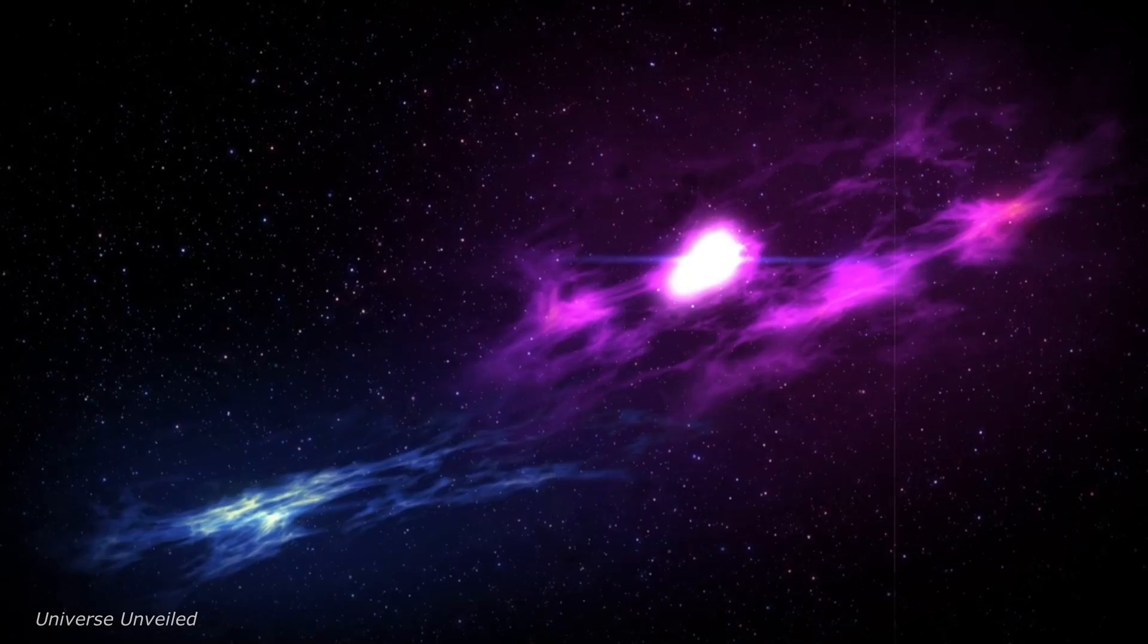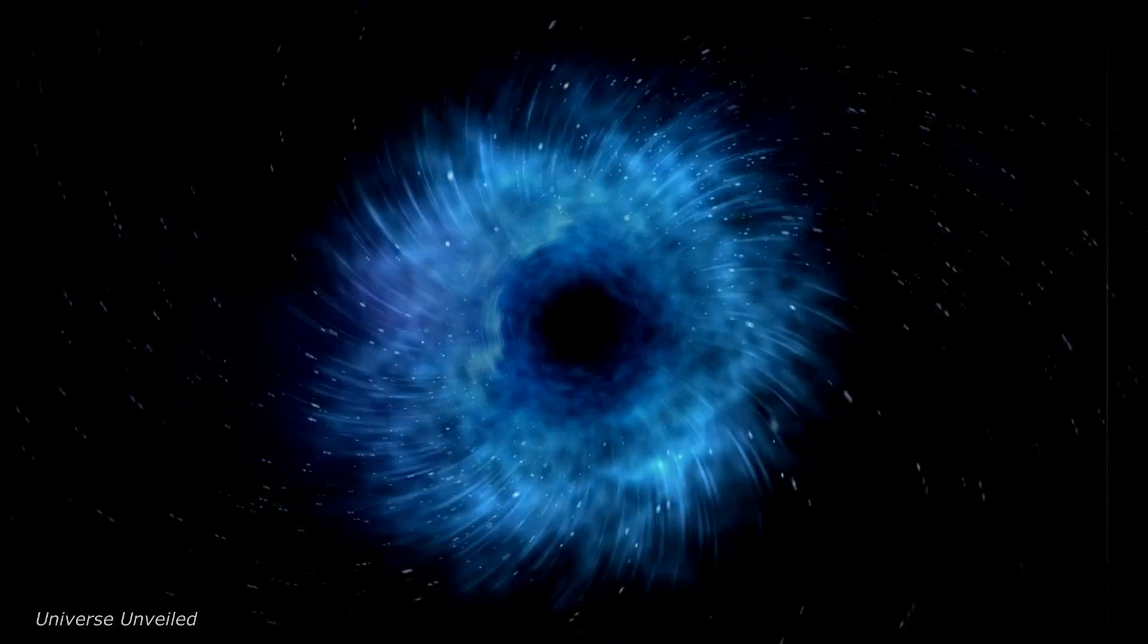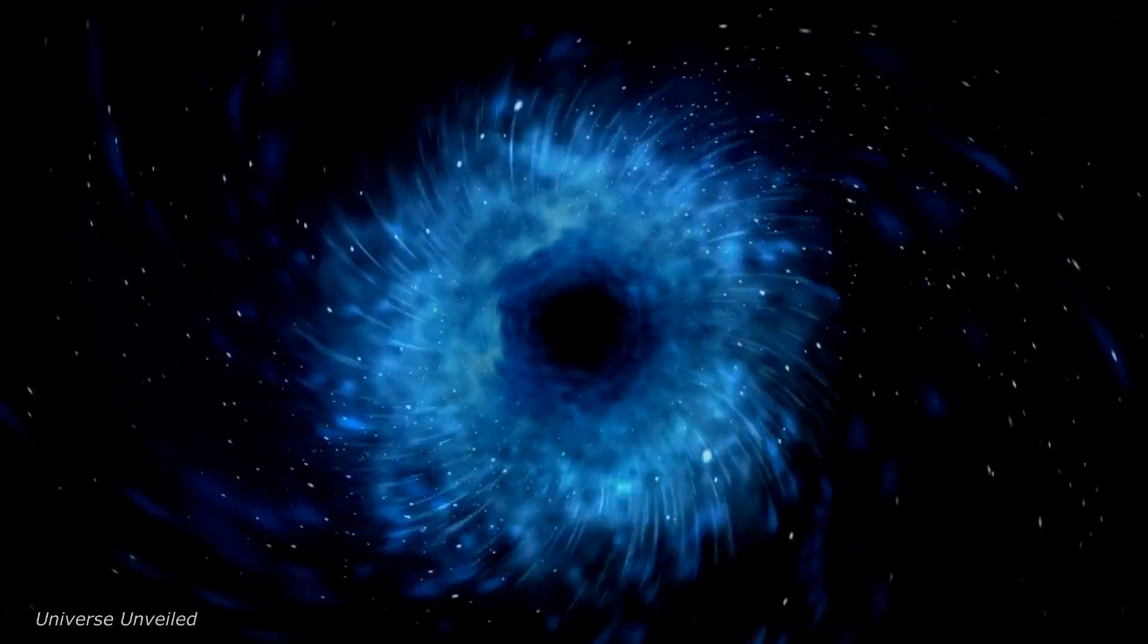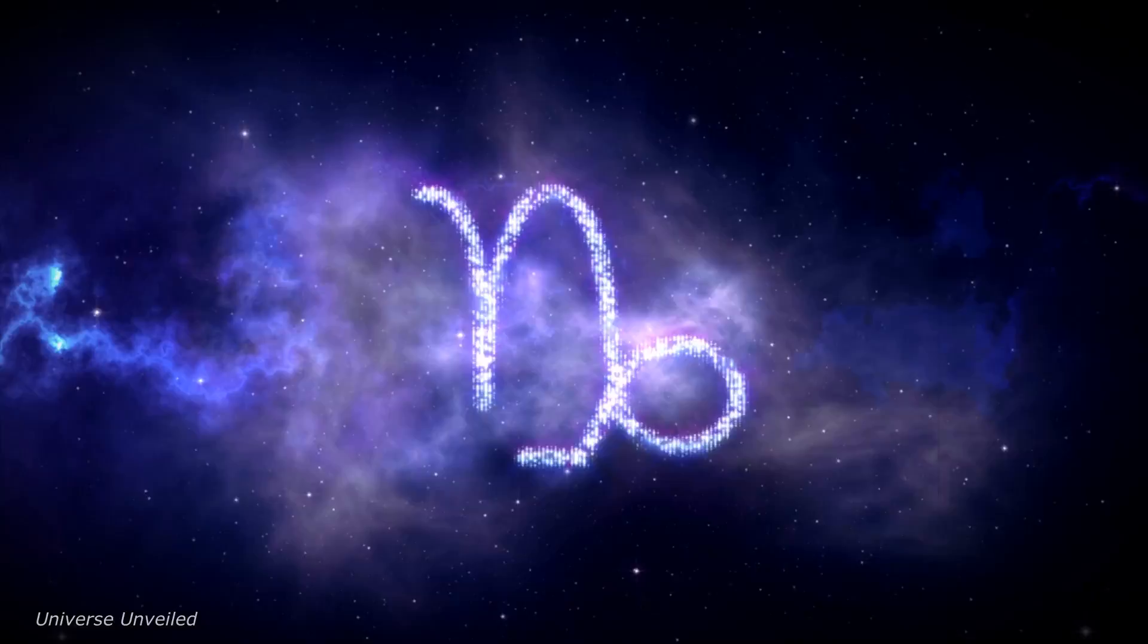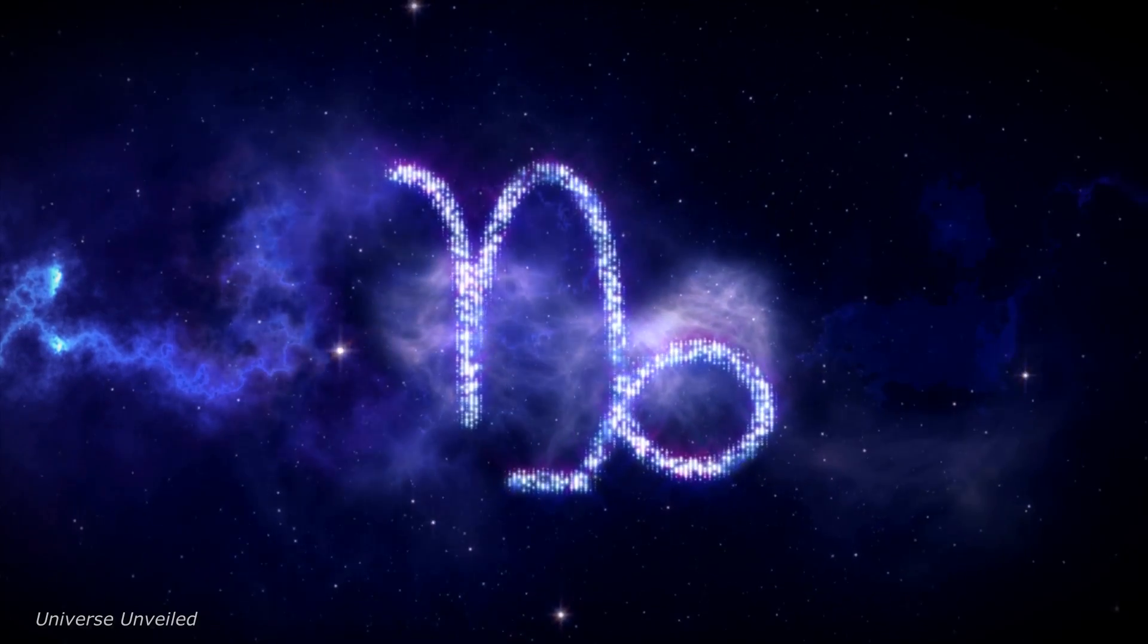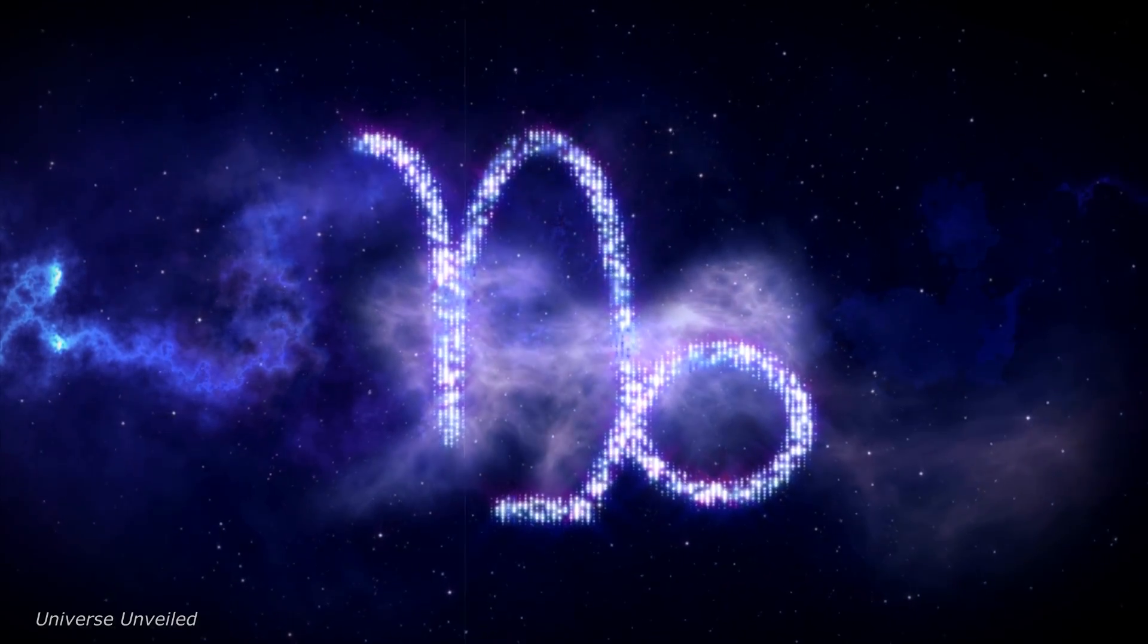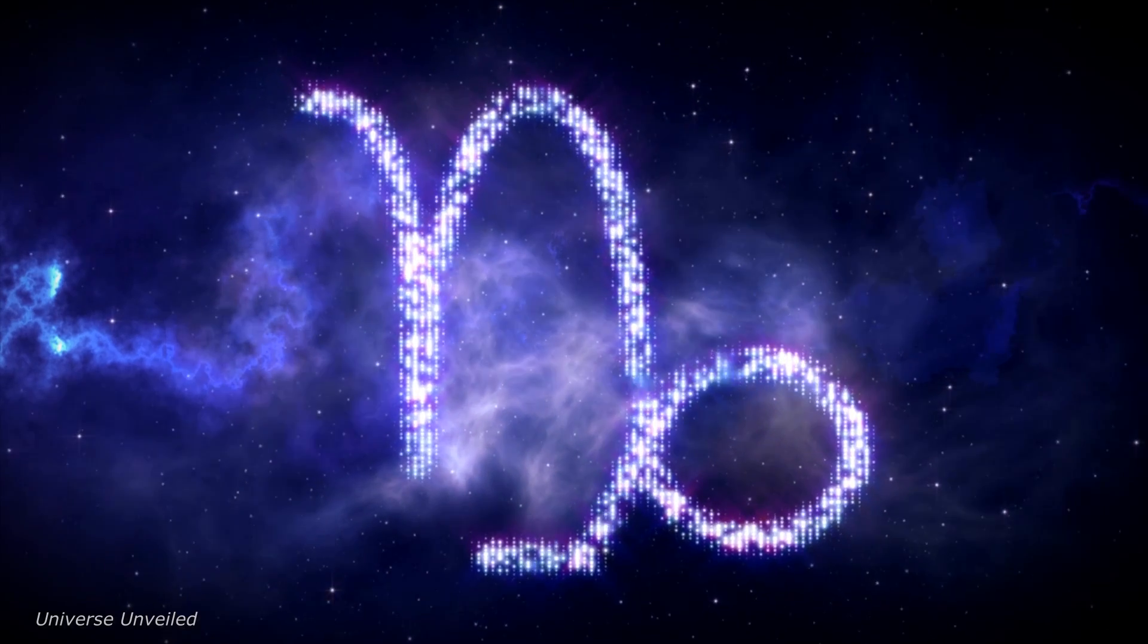Our sun is more than just a celestial object. It's the lifeblood of our solar system, the source of energy that sustains all life on Earth. Its influence extends far beyond our planet, shaping the space environment and influencing the behavior of planets, moons, and comets.